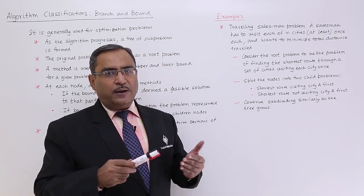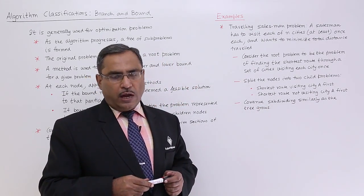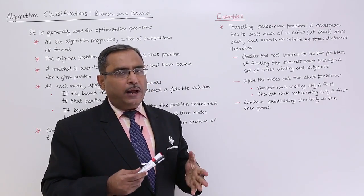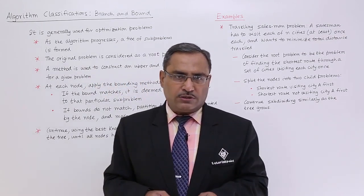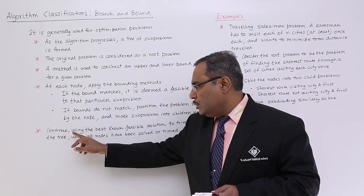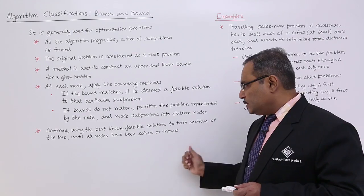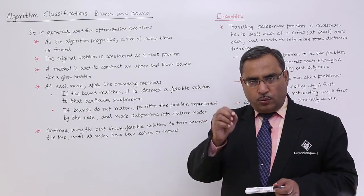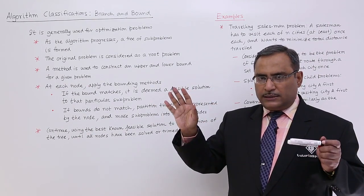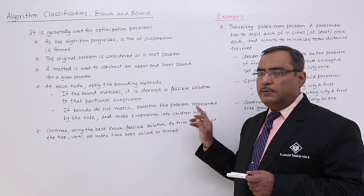Now we are making two child problems. Continue subdividing similarly as the tree grows and we shall have to check which is towards the solution, and that will be branch, and rest which are not towards the solution will be bound. Continue using the best known feasible solution to trim sections of the tree. Knowing that best known feasible solution, we can trim the other sections of the tree until all nodes have been solved or trimmed.